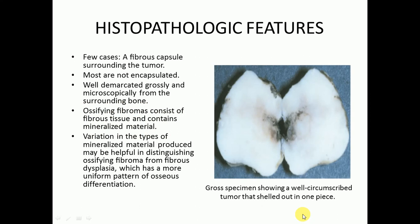Regarding histopathological features, in a few cases a fibrous capsule surrounding the tumor can be found, but most are not encapsulated. Most are well demarcated grossly and microscopically from the surrounding bone, which is why the lesion can be enucleated. Ossifying fibroma consists of fibrous tissue containing mineralized material. Variation in the types of mineralized material produced may be helpful in distinguishing ossifying fibroma from fibrous dysplasia, which has a more uniform pattern of osseous differentiation.